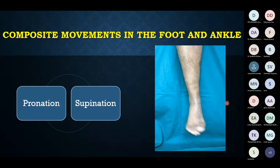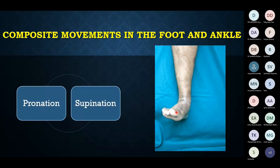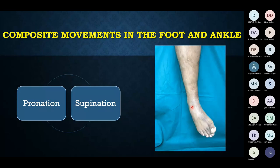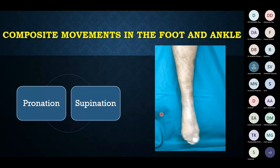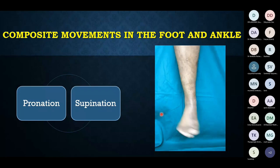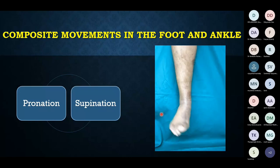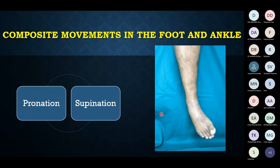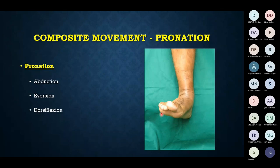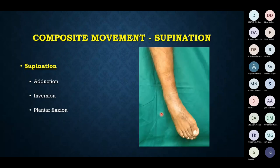The third basic axis of movement is adduction and abduction, occurring about a vertical axis in a transverse plane. The main adductor is tibialis posterior and the main abductor is the peroneae. These axes rarely occur alone — due to the oblique orientation of the talocrural joint, plantar flexion causes medial movement and dorsiflexion causes lateral movement, producing combined movements called pronation and supination.